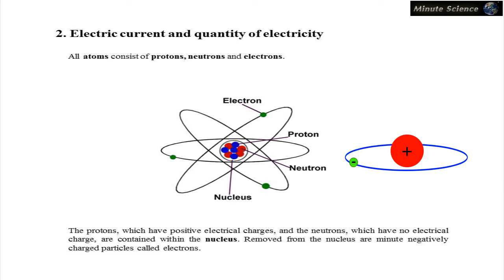The protons, which have positive electrical charges, and the neutrons, which have no electrical charge, are contained within the nucleus.